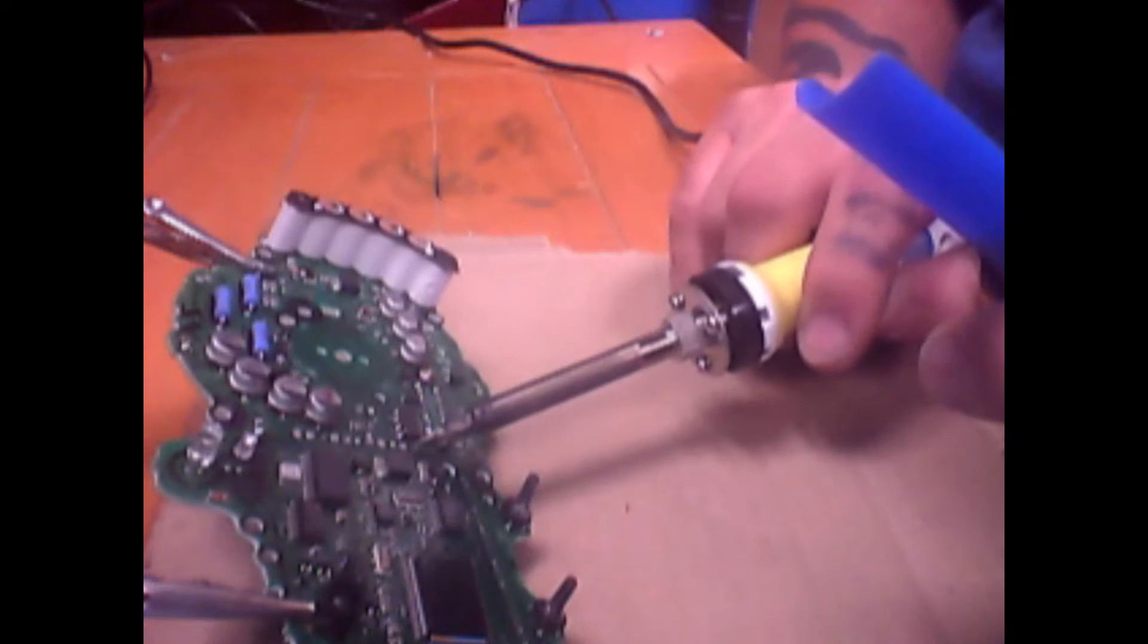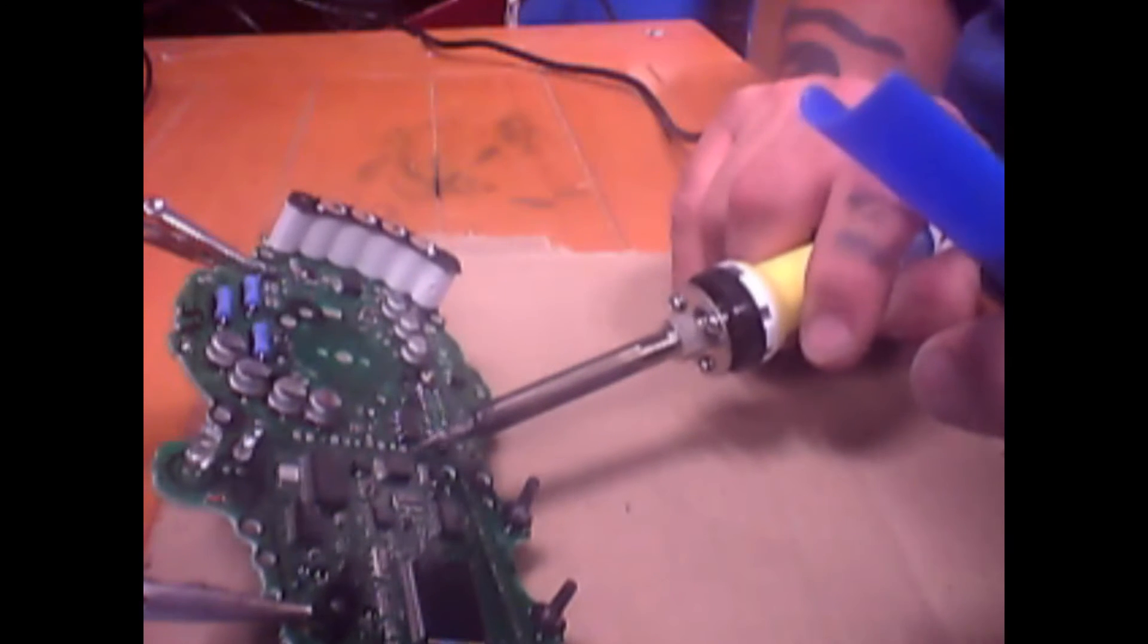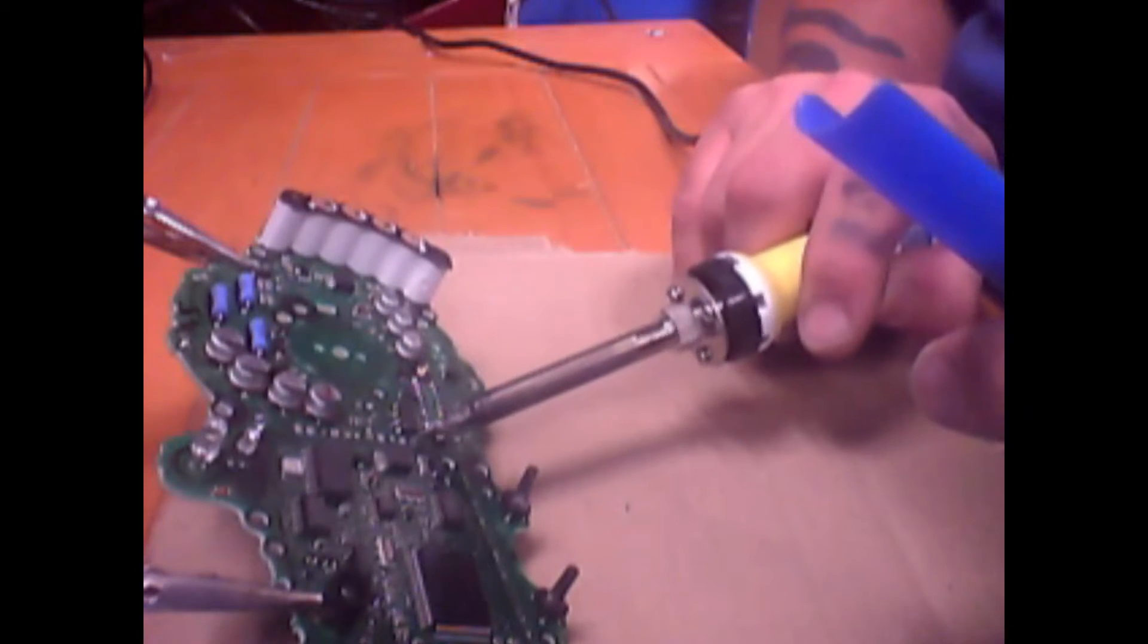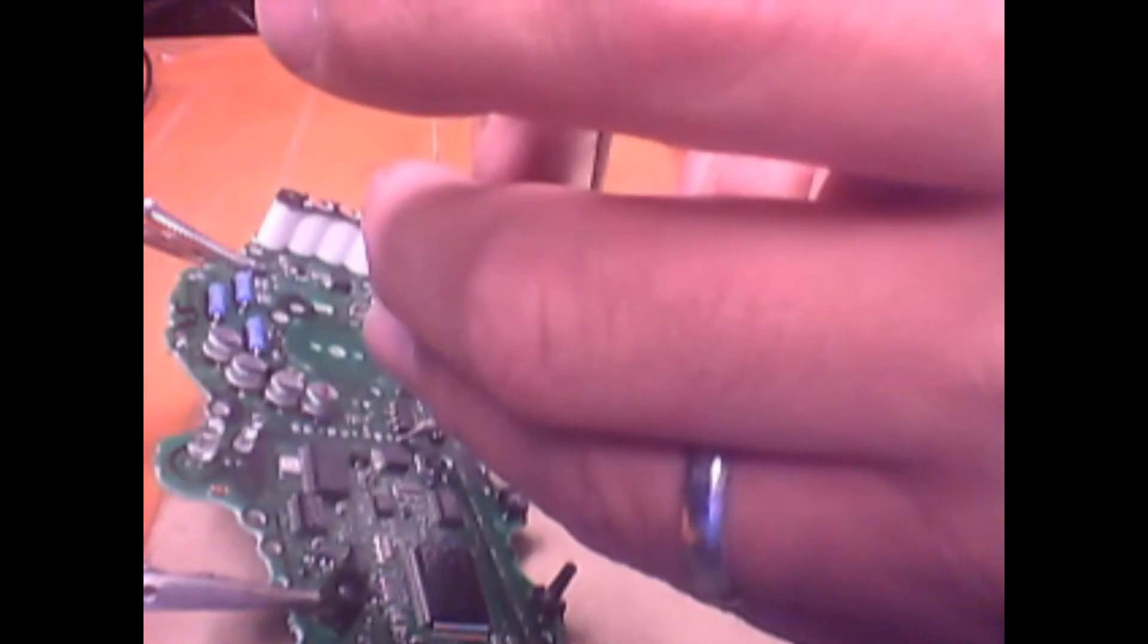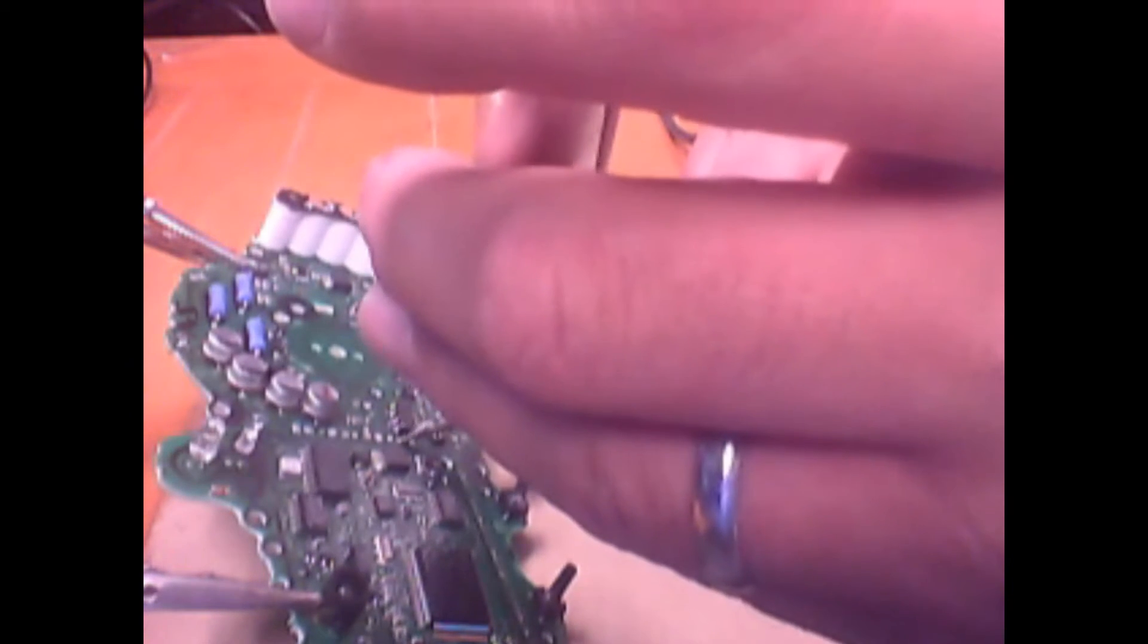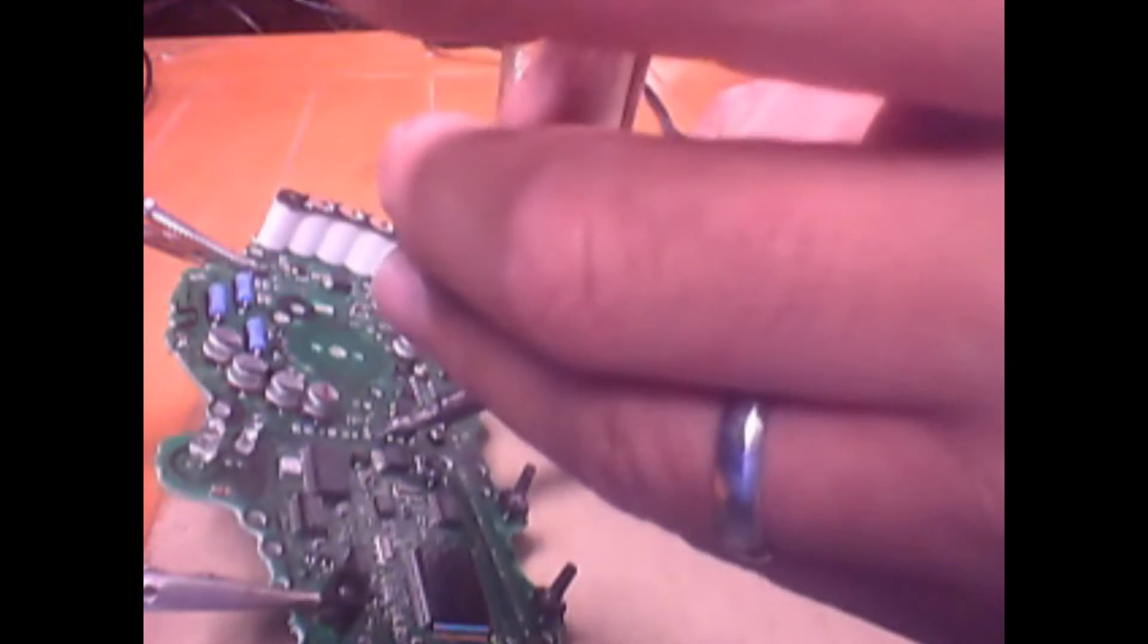What you're doing when you're desoldering all these contact points is you're allowing, when you place the LED on, as flat a bed as possible so that the LED points straight up and it looks nice and tidy and secure.